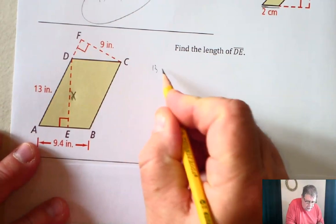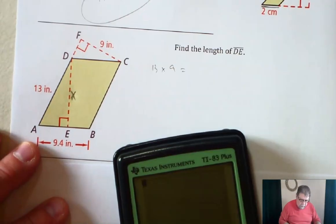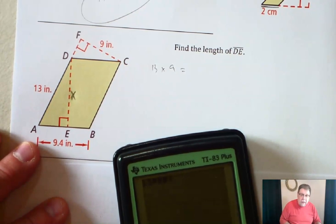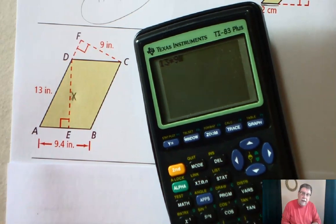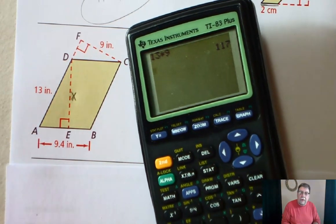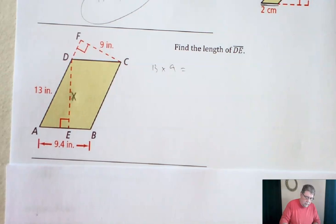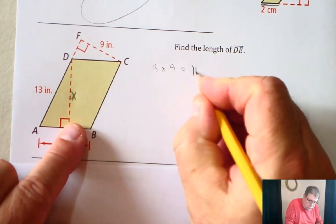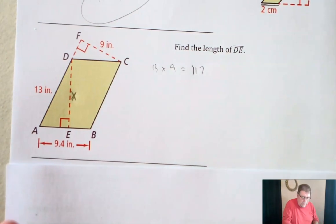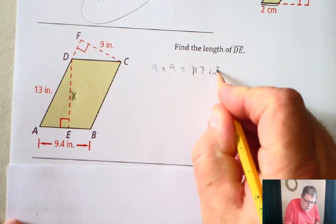So we're going to do 13 times 9. I'm going to get my calculator out for this. 13 times 9 happens to be, I just hit the wrong button, happens to be 117. So the area of this shape is 117 square inches, okay?